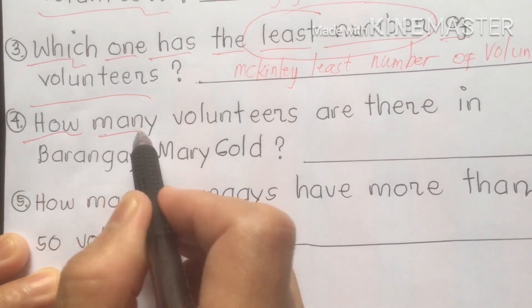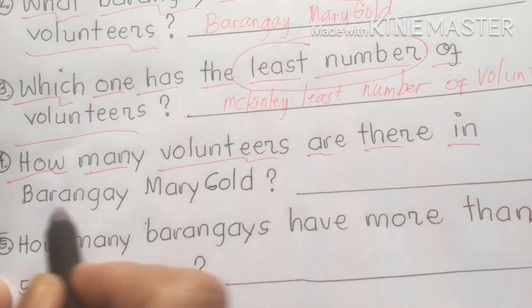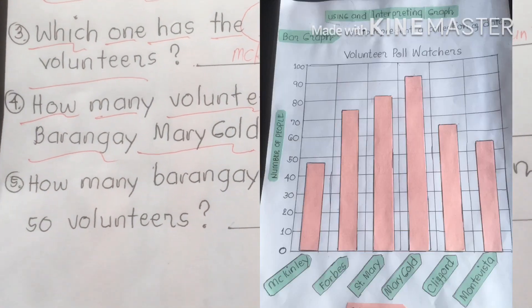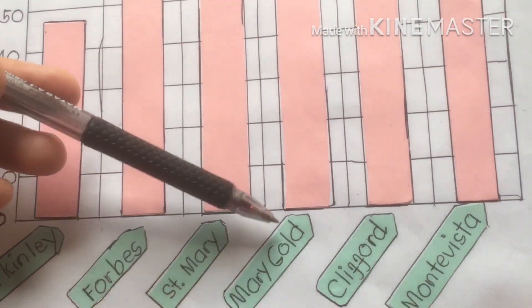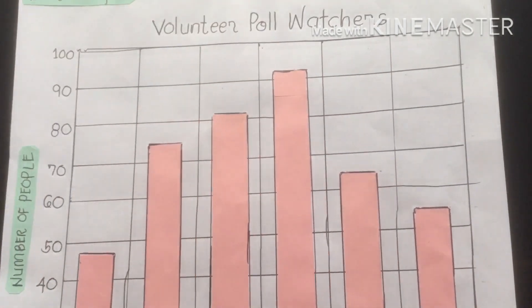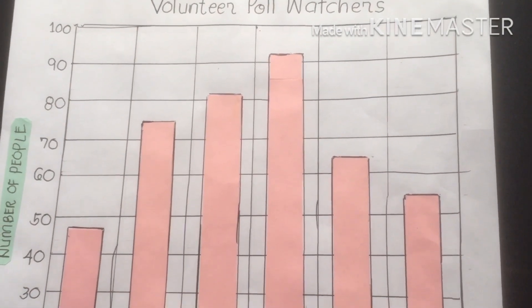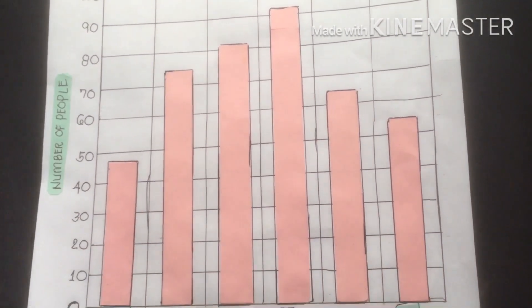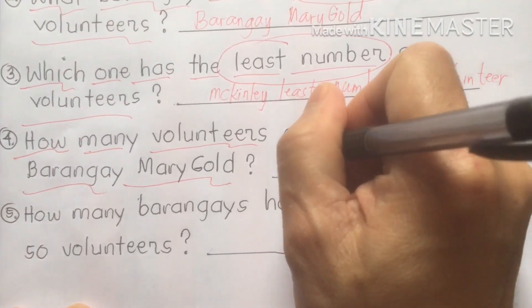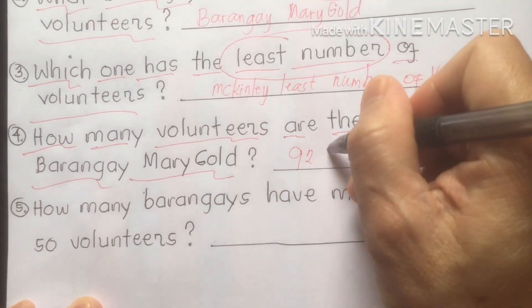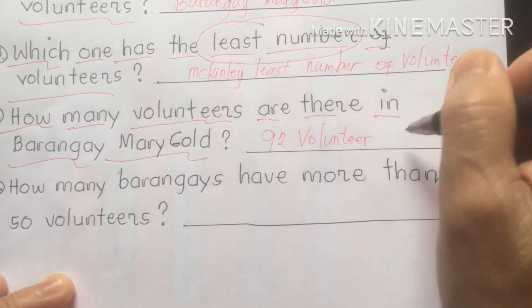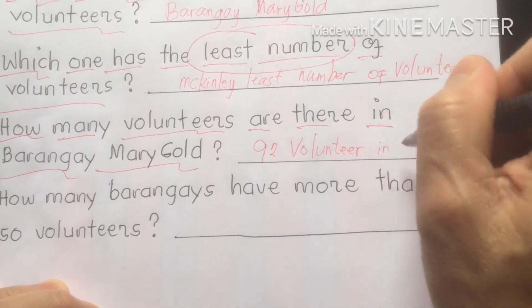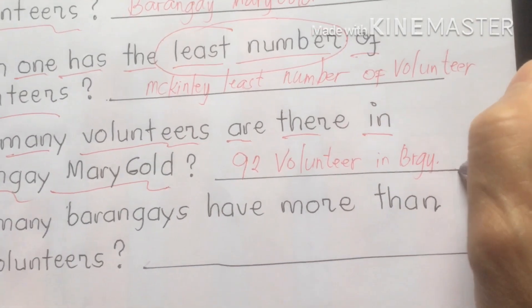Number four: how many volunteers are there in Barangay Marigold? Let us count the number of volunteers in Barangay Marigold. Following our graph, it shows 92 — that is 92 people who volunteered during the election. So we have 92 volunteers in Barangay Marigold.